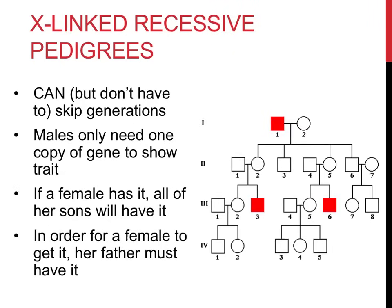X-linked recessive traits, such as male pattern baldness and red-green colorblindness, exhibit many similarities yet some significant differences to autosomal recessive traits. Since these traits are recessive, it is possible for them to skip generations, though it doesn't mean they have to. The primary difference involves the fact that males only have one X chromosome. As a result, it is much more common for males to have these characteristics than females. This fact is demonstrated in the pedigree on this slide, where only males — the squares — show this particular trait.